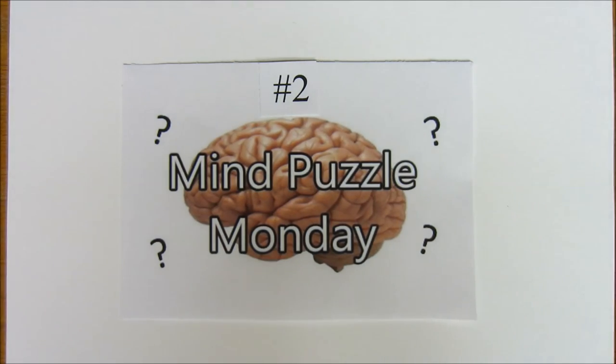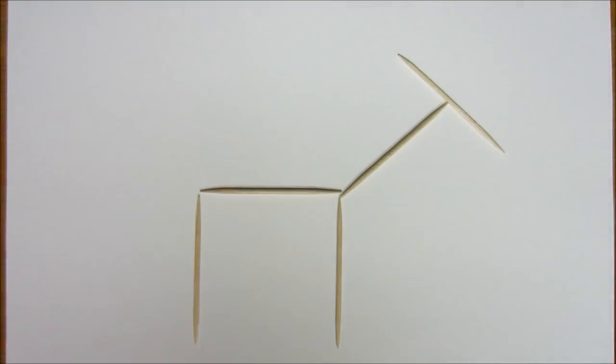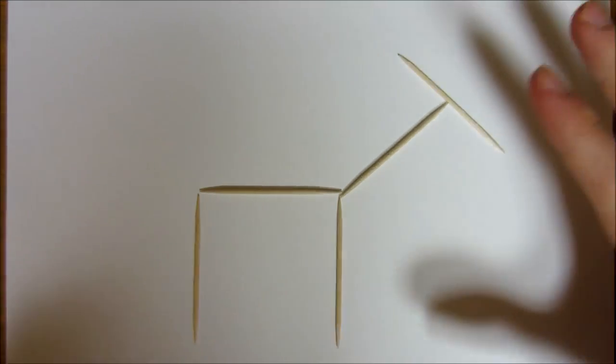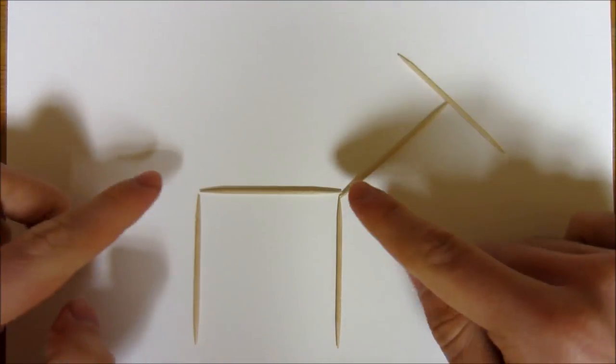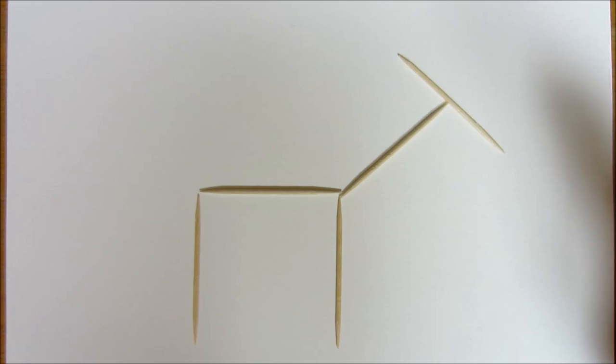Hey guys, welcome to Mind Puzzle Monday number two. Here's the setup for today's puzzle: all you need is five toothpicks arranged in this fashion. What this is, is a giraffe. You've got the legs, the body, the neck, and the head.